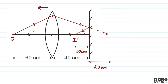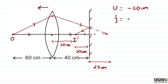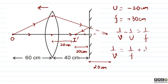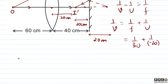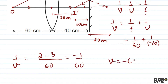Now the reflected rays travel back and pass through the convex lens again. The image formed by the mirror is 20 cm to the left of the mirror, which is 20 cm from the lens, so u equals minus 20 cm. The focal length is plus 30 cm for the convex lens. Using the lens formula: 1/v equals 1/f plus 1/u equals 1/30 plus 1/(minus 20). Taking LCM as 60: 2 minus 3 equals minus 1, so 1/v equals minus 1/60, meaning v equals minus 60 cm.